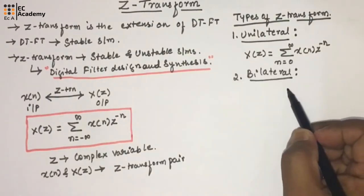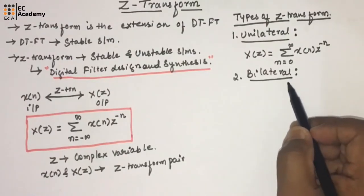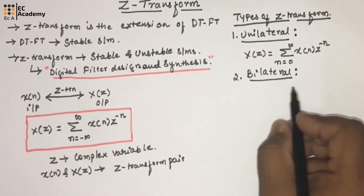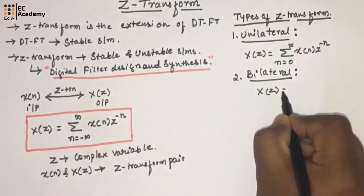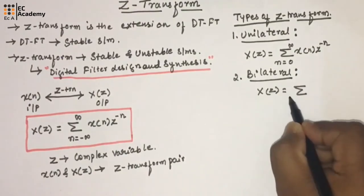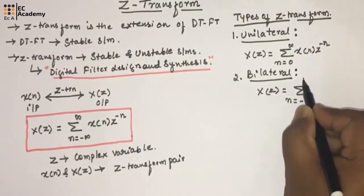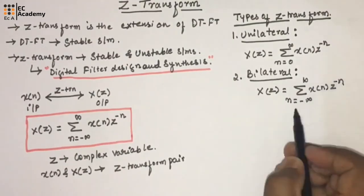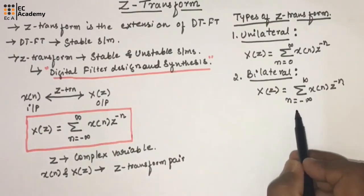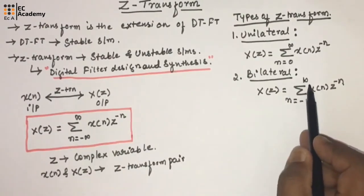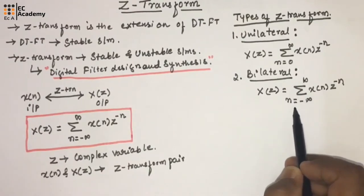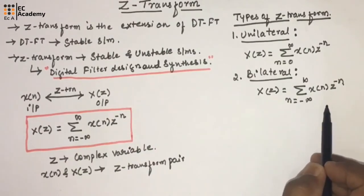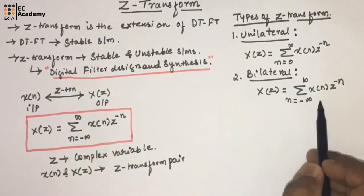Now we will see the bilateral Z-transform. The Z-transform with both-sided summation is known as bilateral Z-transform. We can write X of Z equals summation from N equals minus infinity to infinity of X of N times Z to the power of minus N. It is known as bilateral because the summation is from minus infinity to infinity, meaning from minus infinity to 0 and from 0 to infinity — a both-sided summation.